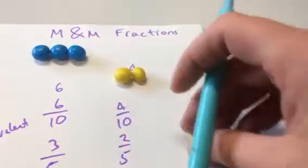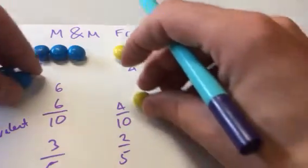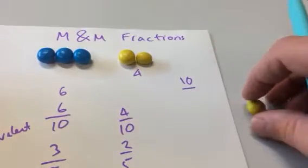Two fifths. So there you can see, dividing them both by two, that's six tenths and four tenths are equivalent to three fifths and two fifths.